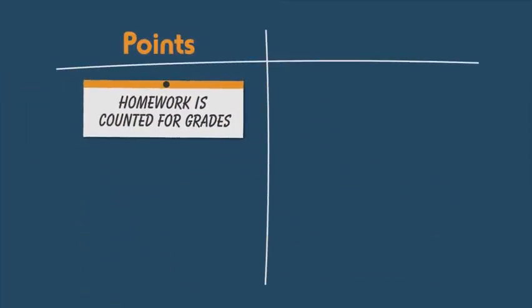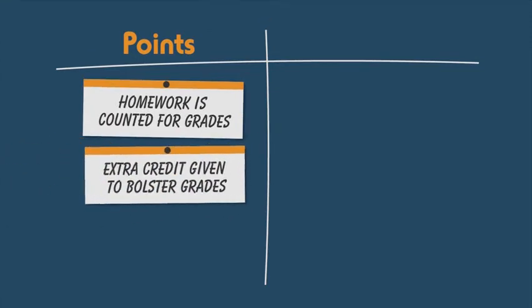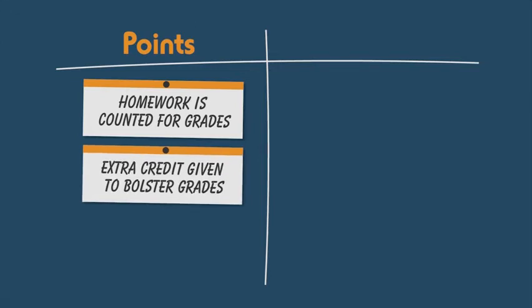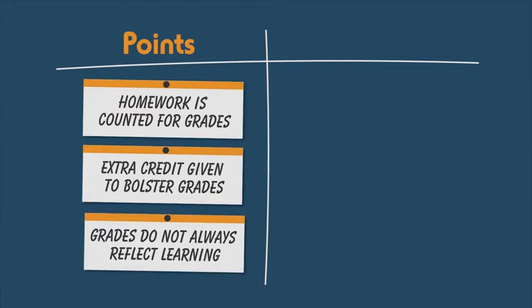With a point system, homework is counted for grades even though a student is just learning new concepts. Extra credit may be given to bolster poor grades due to unlearned concepts. Grades are not always an accurate reflection of student learning because of penalties or rewards for student behavior, such as late work, completion, or participation.